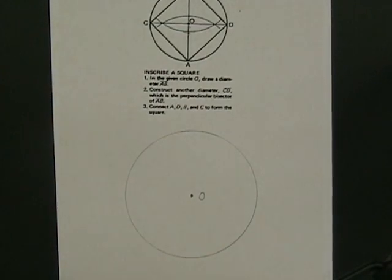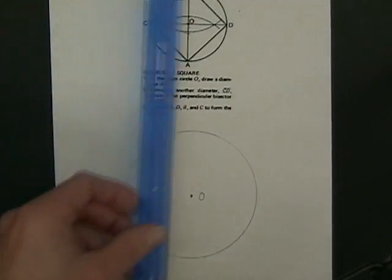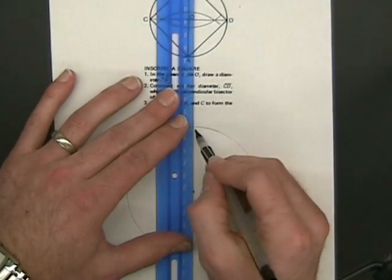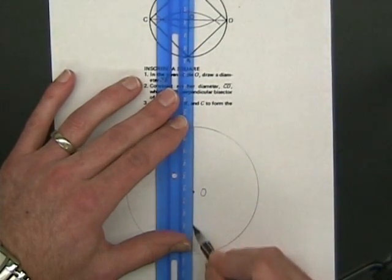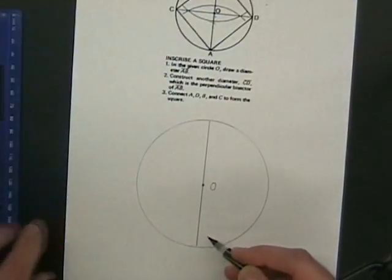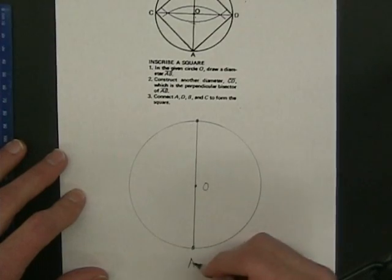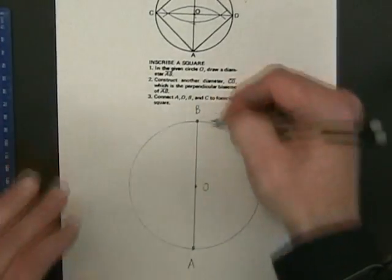Now just like with the triangle, we're going to draw in a diameter of circle O. The diameter will go through the center and intersect the circle twice. Label those points of intersection A and B.